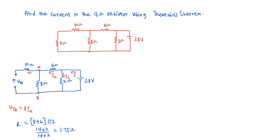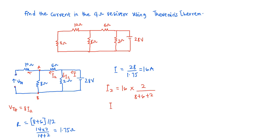Now let's find the current in the circuit. I will be equal to 28 divided by 1.75, which gives us a value of 16 amperes. So now our main goal is to find I2. We have I2 equal to 16 times 2 ohms divided by (8 + 6 + 2), which gives us I2 equal to 2 amperes.